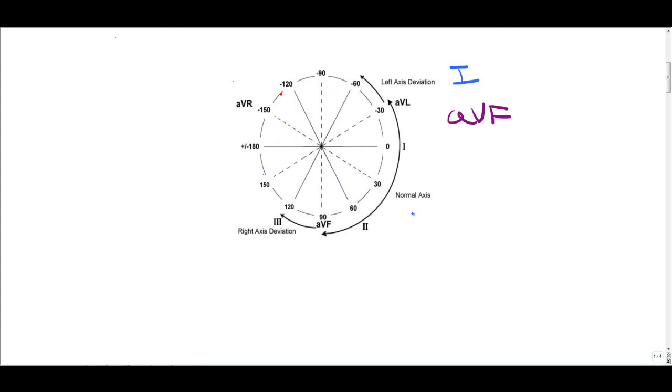AVF is the second lead we need to look at to determine axis. It is positive where the area is shaded blue and negative where the area is shaded red. These two leads are the first two leads you'll use to determine axis on an EKG. But there's a third lead we'll need to use called lead 2. Lead 2, shown here,